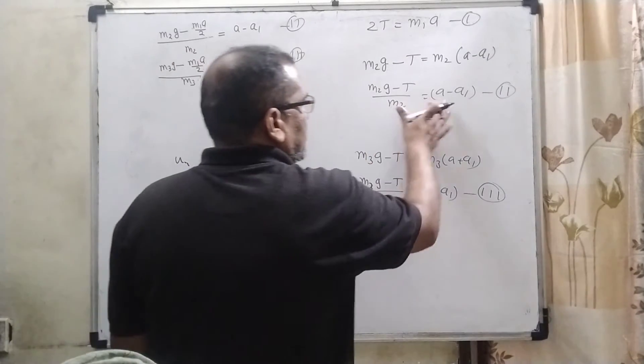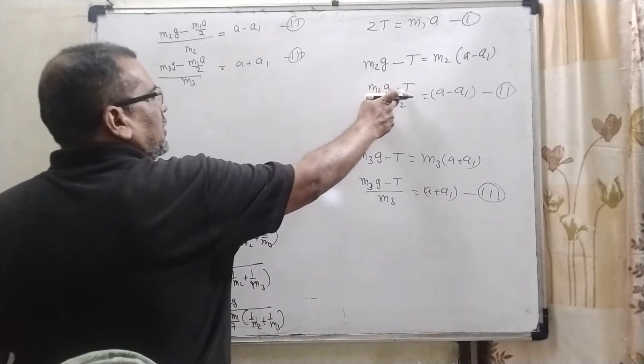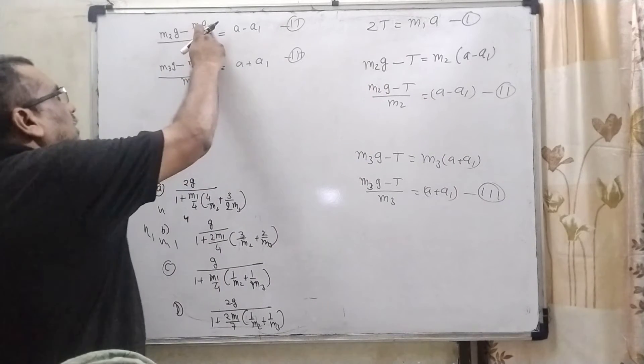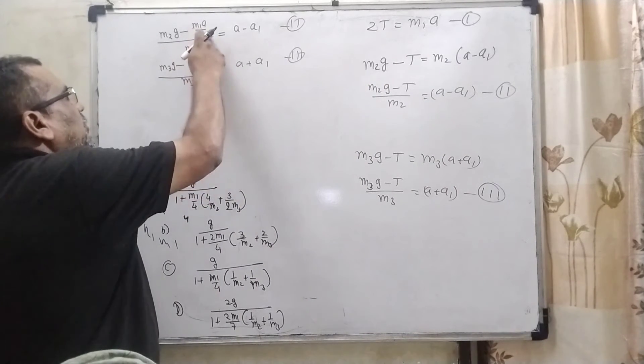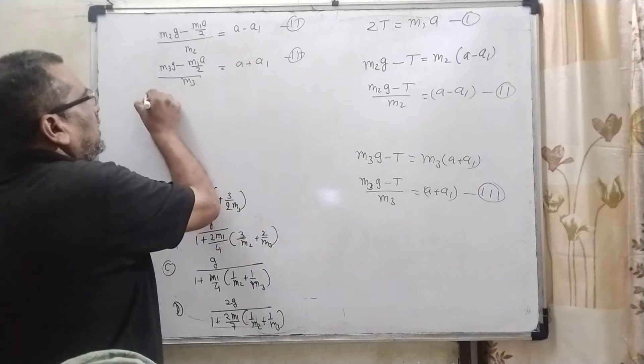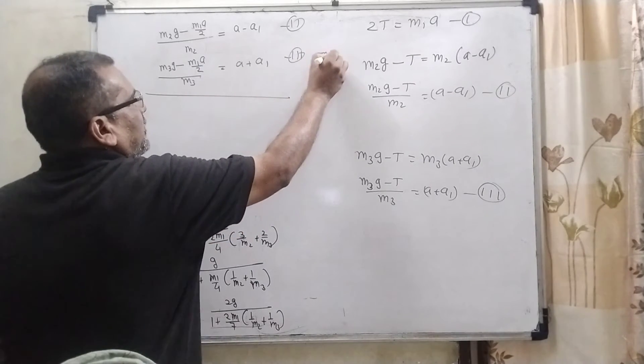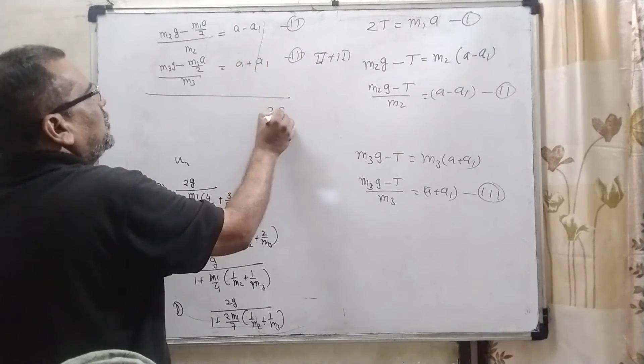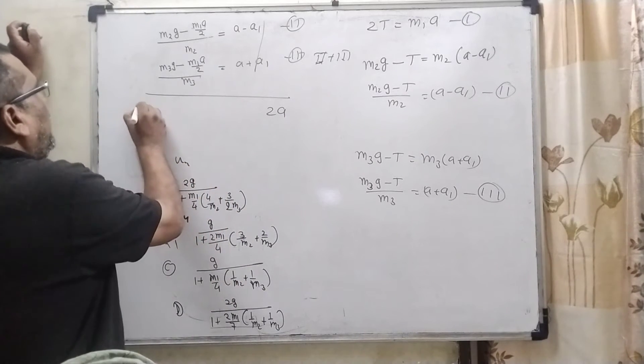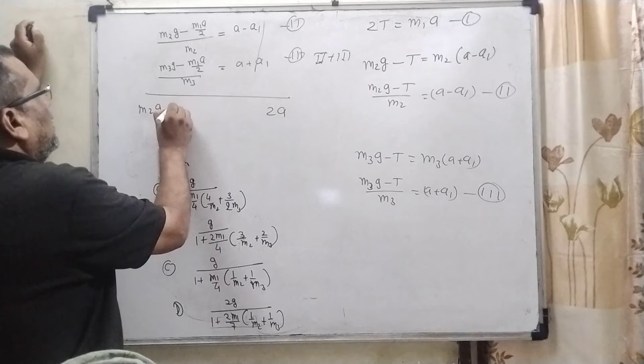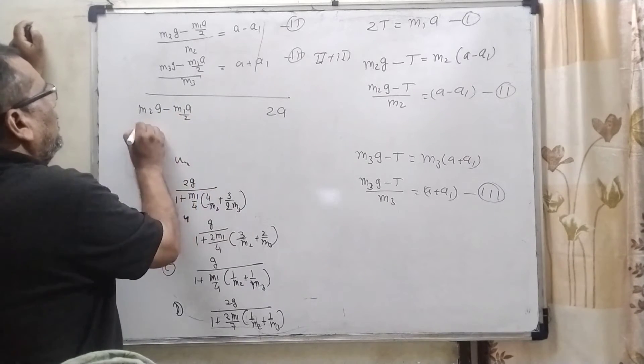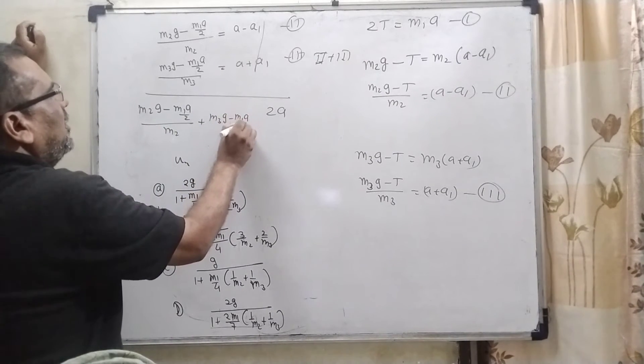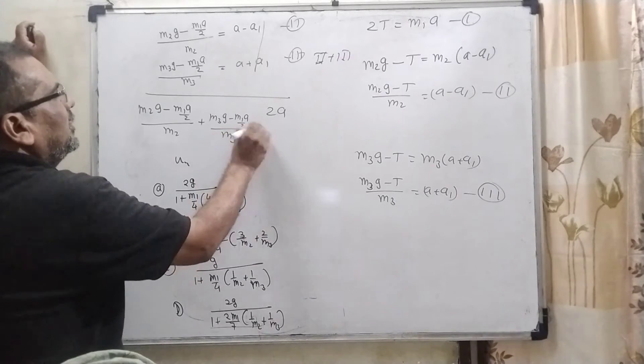Now, by adding second equation and third equation and substitute the value of T from the first equation that is T equal to M1 A by 2. So here, we have to put the value of T, M1 A by 2. Then by adding second equation and third equation, M2 G minus M1 A by 2 upon M2 plus M3 G minus M1 A by 2 upon M3. It is equation number 4.